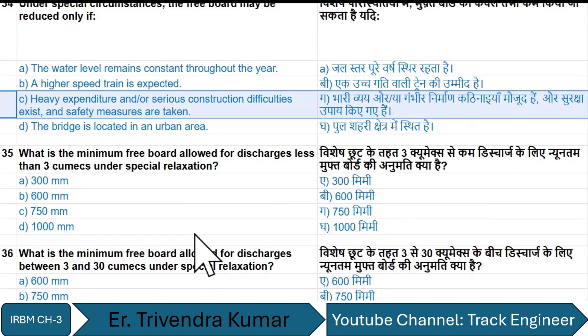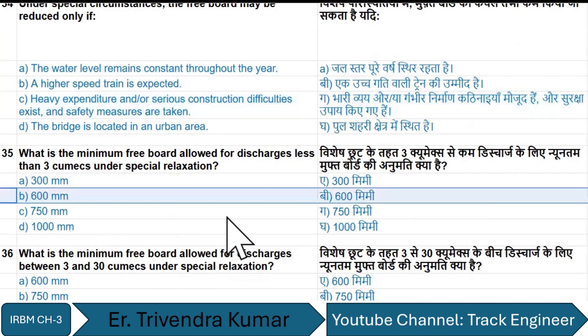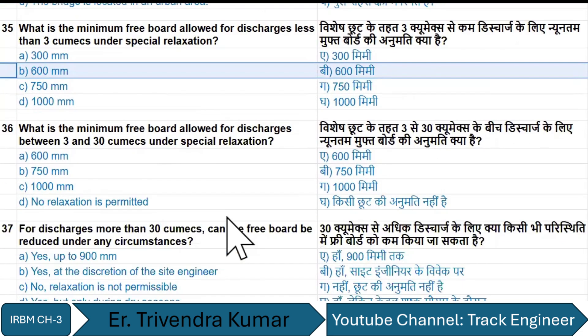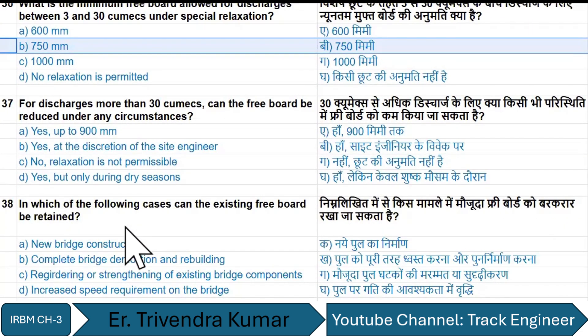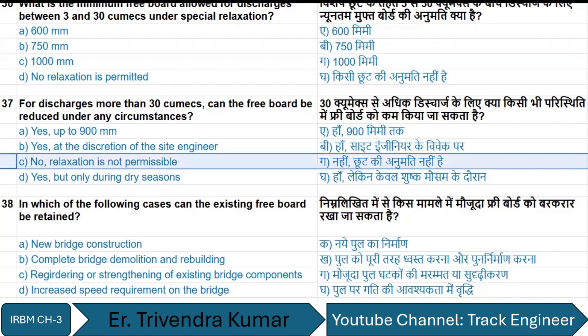When the discharge is below 3 cumecs, the minimum freeboard is 600 mm. For discharge between 3 to 30 cumecs under special relaxation, the minimum freeboard allowed is 750 mm. For discharge more than 30 cumecs, the freeboard cannot be reduced under any circumstances — no relaxation is permissible.